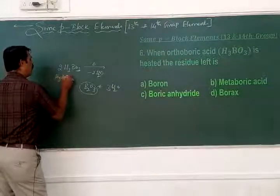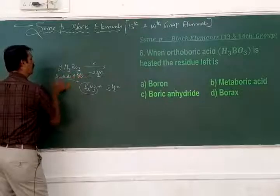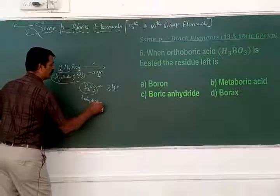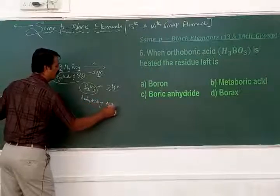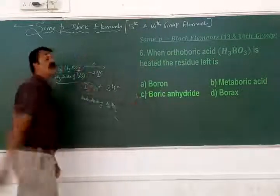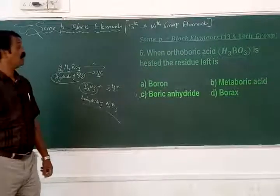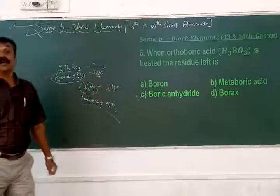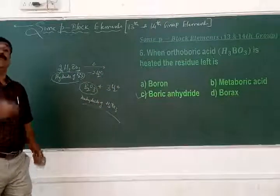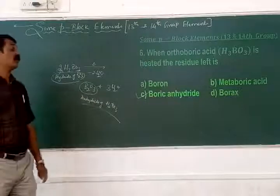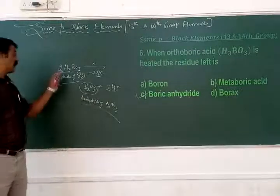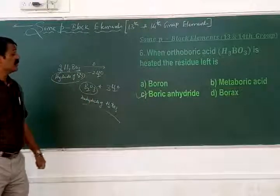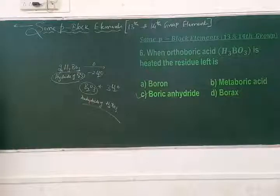B₂O₃ is called the anhydride of boric acid. Anhydride means the compound formed by the loss of water. Since it is obtained from boric acid (H₃BO₃), the compound name is boric anhydride.